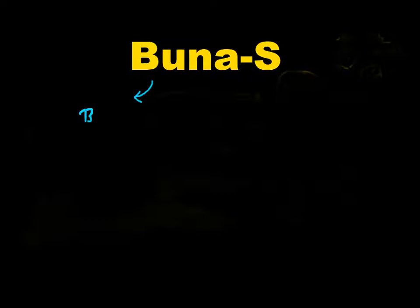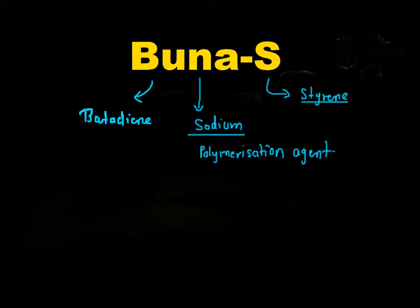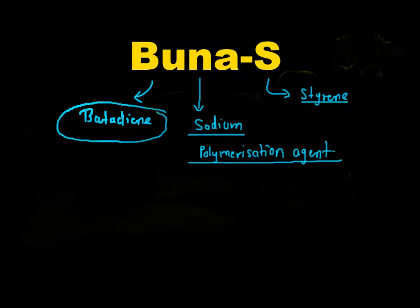Buna-S is a type of synthetic rubber where BU stands for butadiene, S stands for styrene, and Na stands for sodium, which is nothing but the polymerizing agent. It is made up of 3 moles of butadiene and 1 mole of styrene.